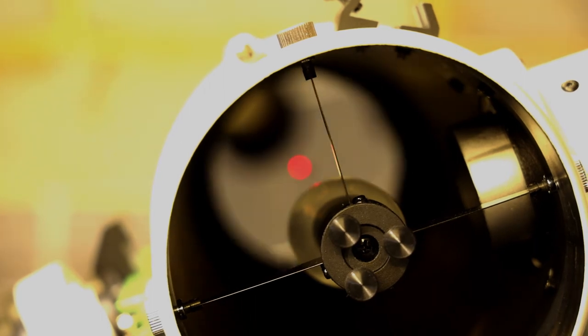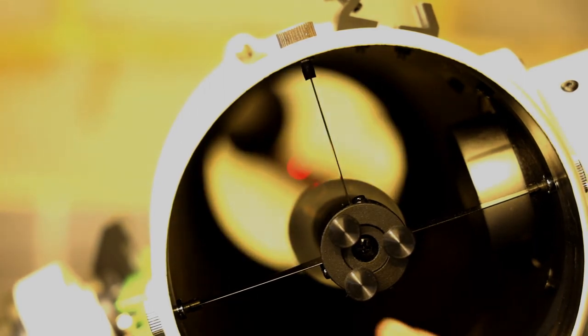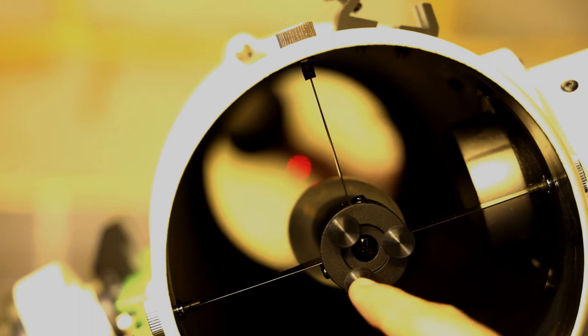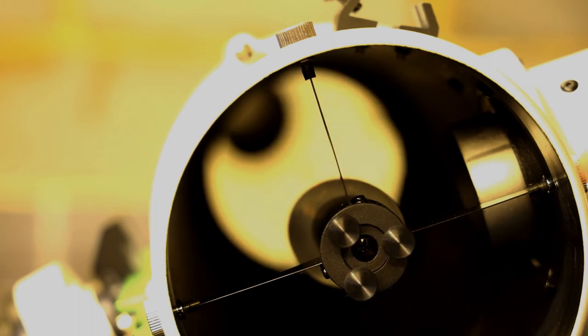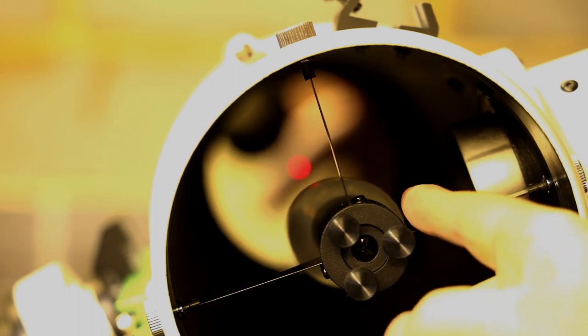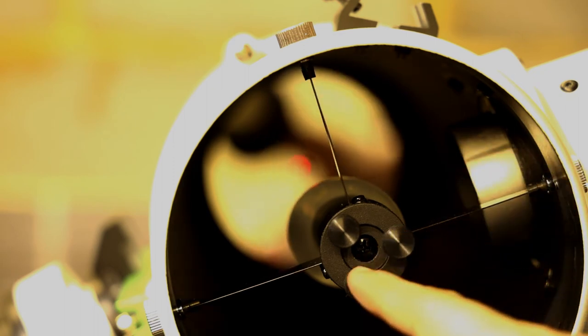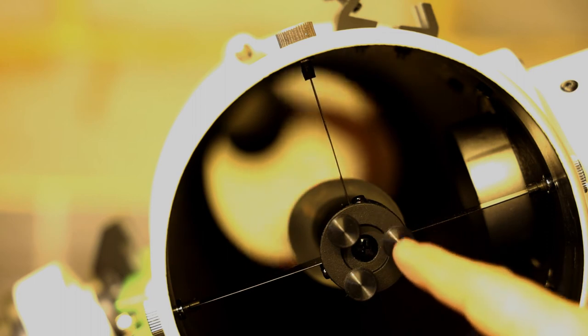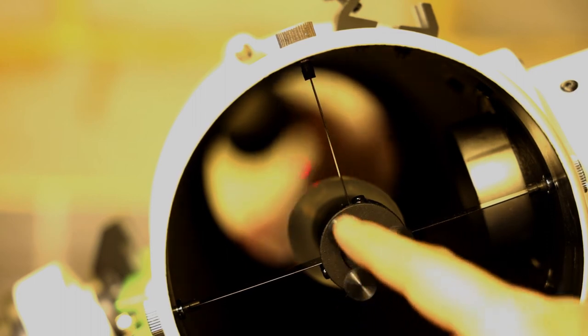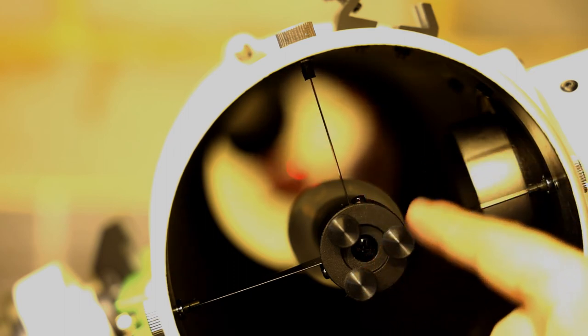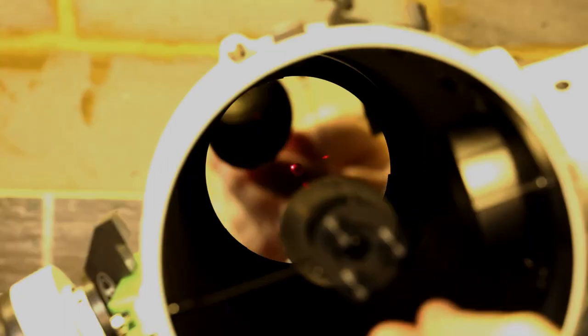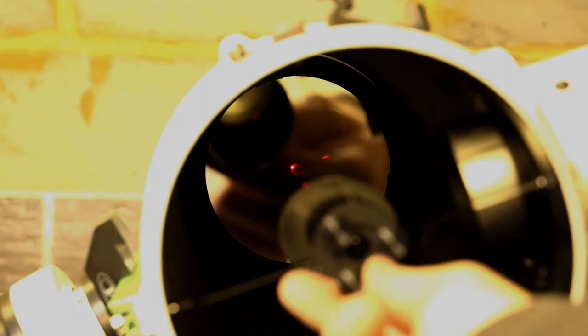We make those adjustments by these screws at the front of the scope. You may have allen key bolts here that require an allen key to turn them. I've replaced these with a product known as Bob's Knobs and I'll put a link in the description of where you can get them from. But these then become thumb screws and make collimation a lot easier.